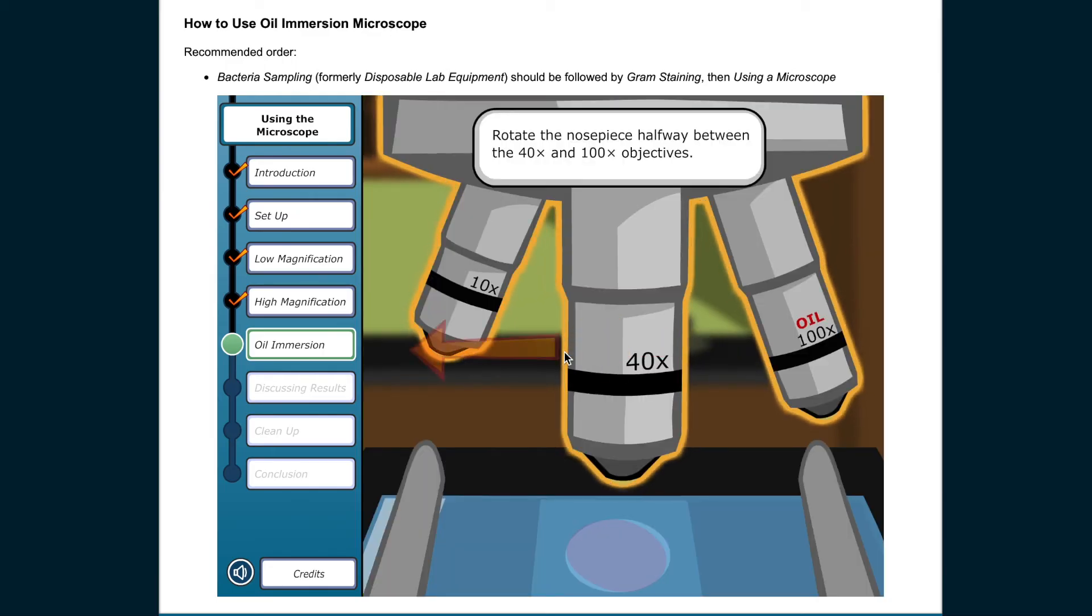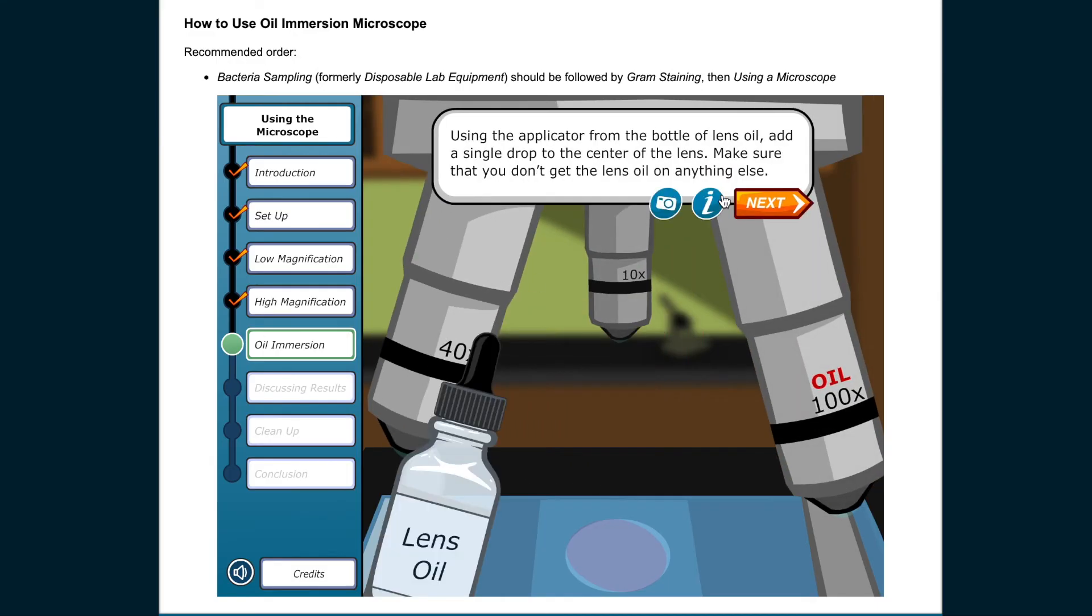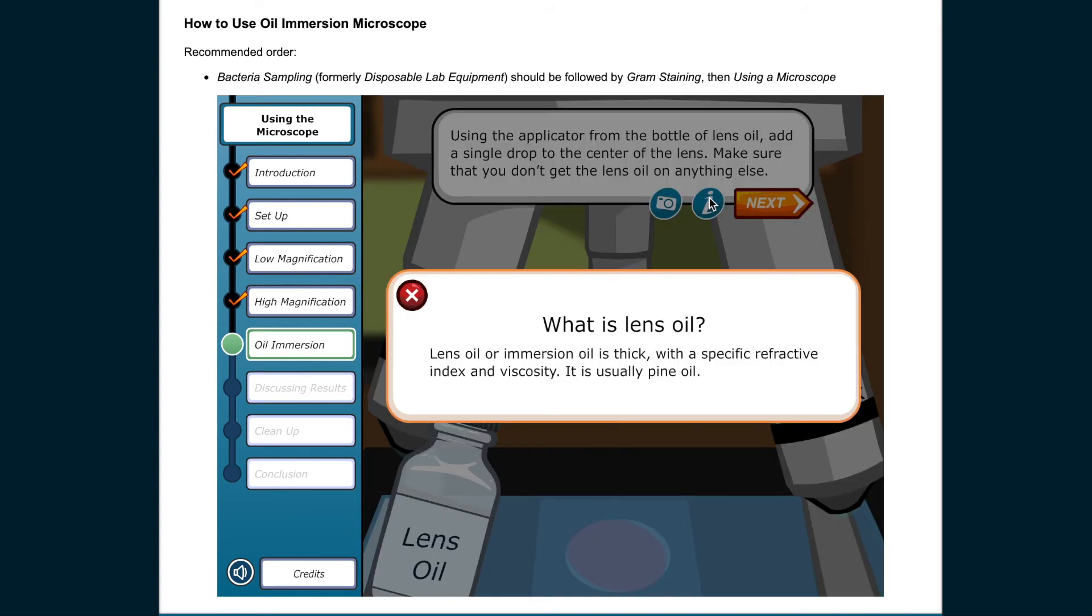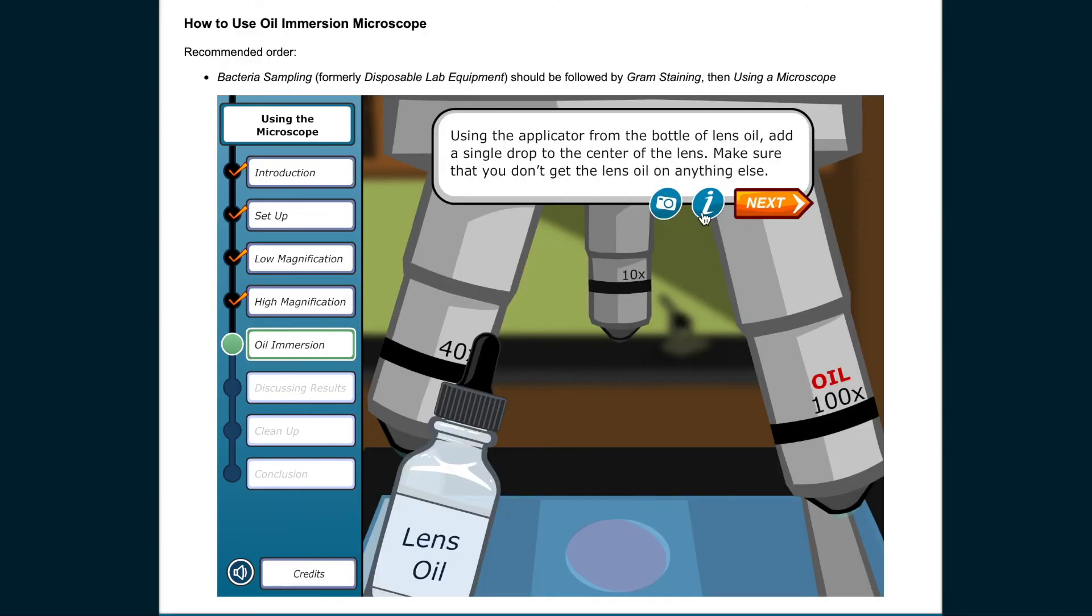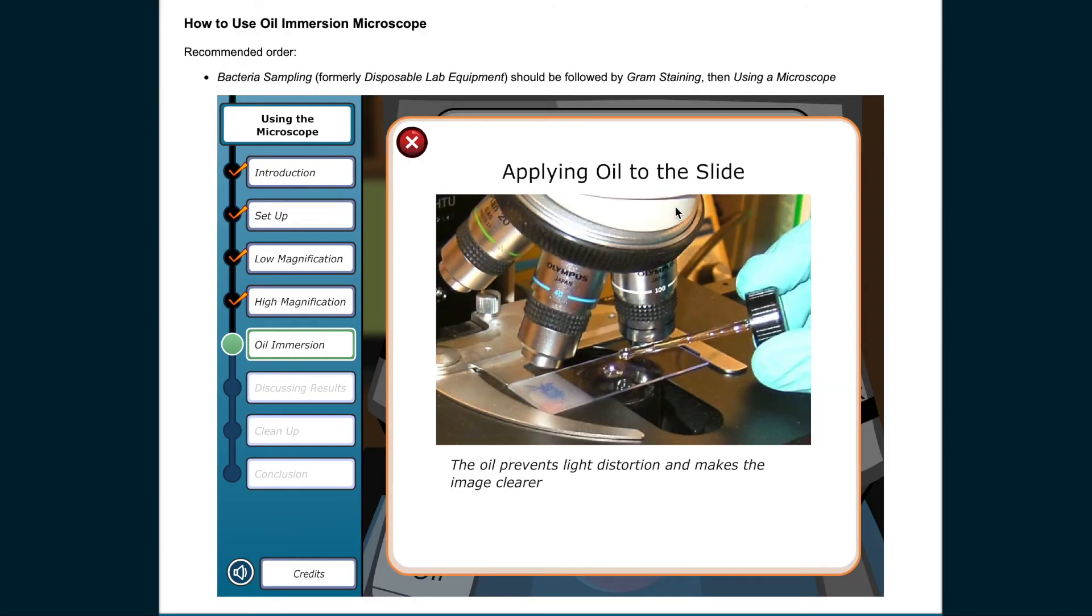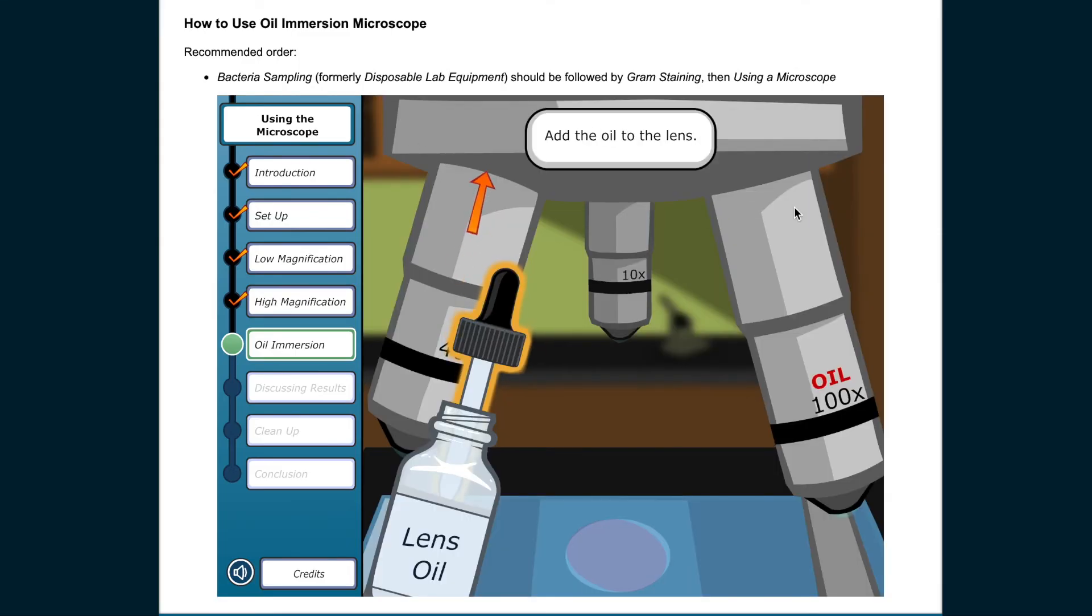Rotate the nose piece halfway between the 40 times and 100 times objectives. Using the applicator from the bottle of lens oil, add a single drop to the center of the lens. Make sure that you don't get the lens oil on anything else. What is lens oil? Lens oil, or immersion oil, is thick, with a specific refractive index and viscosity. It is usually pine oil.